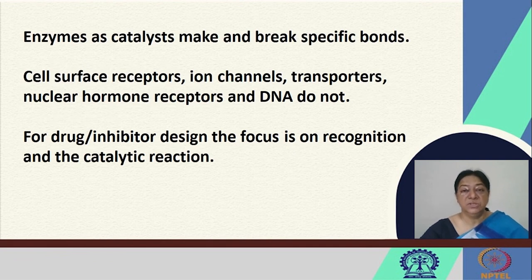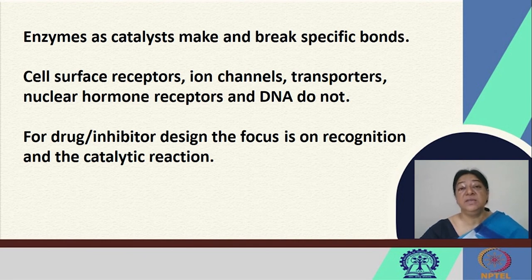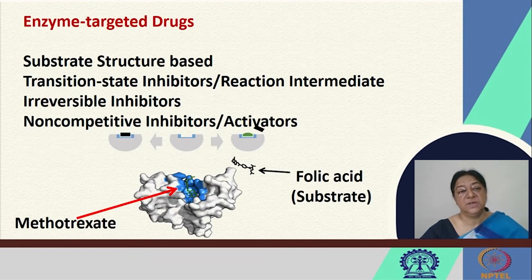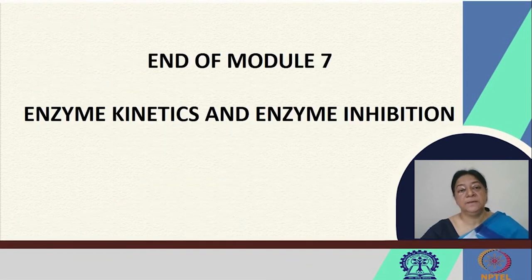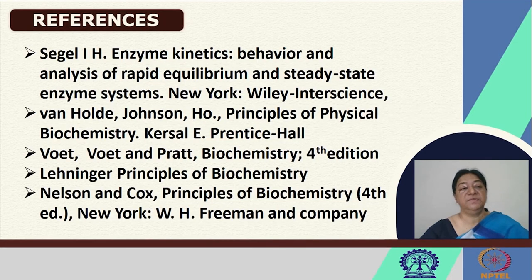In our discussions of enzymes, we have looked at them as catalysts to break specific bonds. They act as cell surface receptors, ion channels, and transporters, and for drug inhibitor design we can focus on their catalytic mechanism or structural aspects to determine substrate-based or structure-based inhibitors and transition state inhibitors for the development of specific enzyme-targeted drugs. This is the end of module 7, which dealt with enzymes, enzyme mechanisms, enzyme kinetics, and enzyme inhibition. These are the references that we have followed.